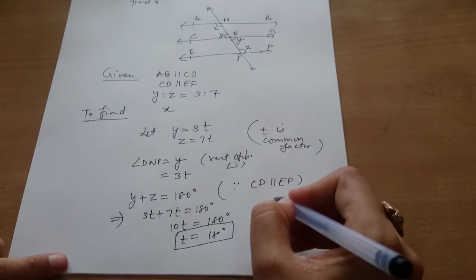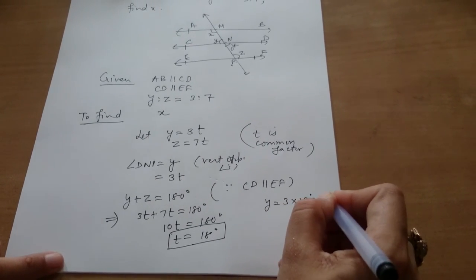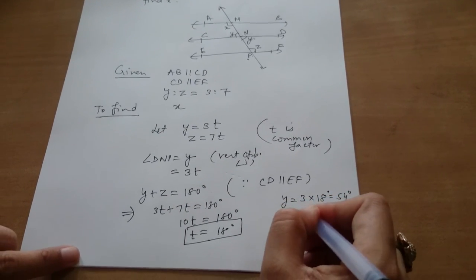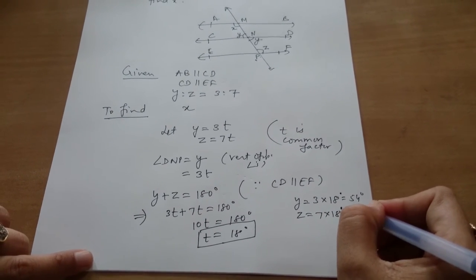So the value of Y is 3 into 18 degrees, that is 54 degrees. Z is 7 into 18 degrees, that is 126 degrees.